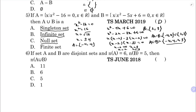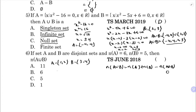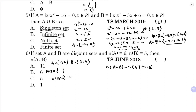Sixth question: if A and B are disjoint sets with n(A) = 6 and n(B) = 5, find n(A union B). The formula is n(A union B) equals n(A) plus n(B), because for disjoint sets n(A intersection B) equals 0. For example, A = {1, 2} and B = {3, 4} - no common elements. So n(A union B) equals 6 plus 5 equals 11. The correct option is A.